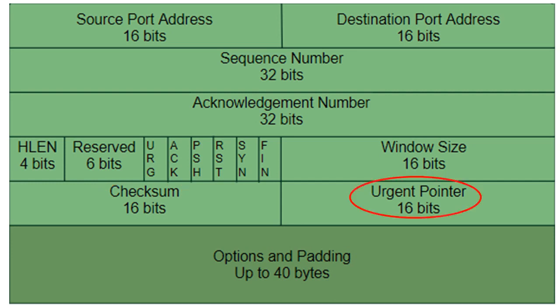The urgent pointer is a 16-bit field which holds the range of urgent data in case the URG flag is set to 1. It indicates how much data in the current segment is urgent, counting from the first bit. It defines the number which must be added to the sequence number to get the number of the last urgent byte in the current segment.